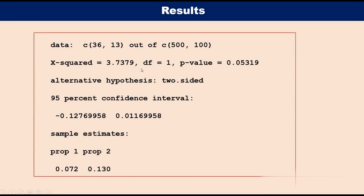Chi-square value is 3.7379 and the p-value is 0.05319. Since the p-value is greater than 0.05, so we accept the null hypothesis and conclude that the proportion of imperfect articles do not differ significantly at 5 percent level of significance.